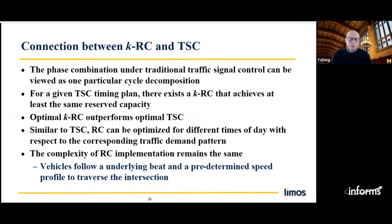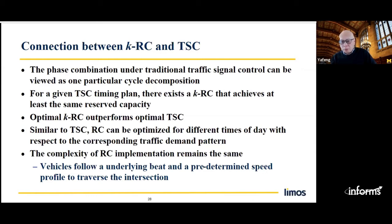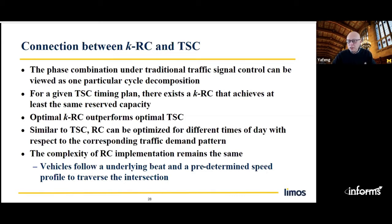Similar to traffic signal control, rhythmic control can be implemented as time-of-day, dividing the day into periods, each with a dominant demand pattern. You optimize rhythmic control for that demand pattern and change the plan between periods. Even varying the plan, the implementation complexity is the same — it depends only on the number of colors. What you need is just the underlying beat length and a predetermined speed profile. You tell the vehicle the beat and the predetermined speed profile; the automated vehicle follows the speed profile to traverse the intersection without any delay and without any collisions.